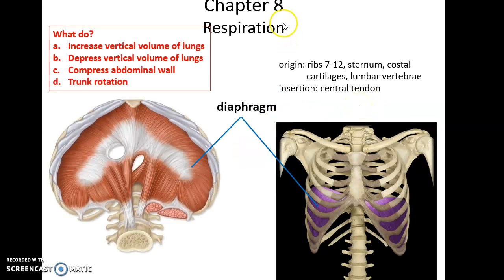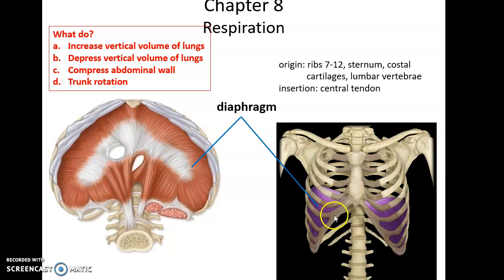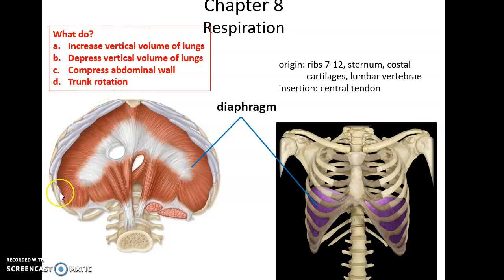We have muscles that are important for breathing or respiration. The most important muscle for that is the diaphragm. The diaphragm has its origin as a circle going all the way around the edge of the internal body — from the vertebra, the ribs, sternum, all the way around. Its insertion is in the middle in what's called a central tendon.